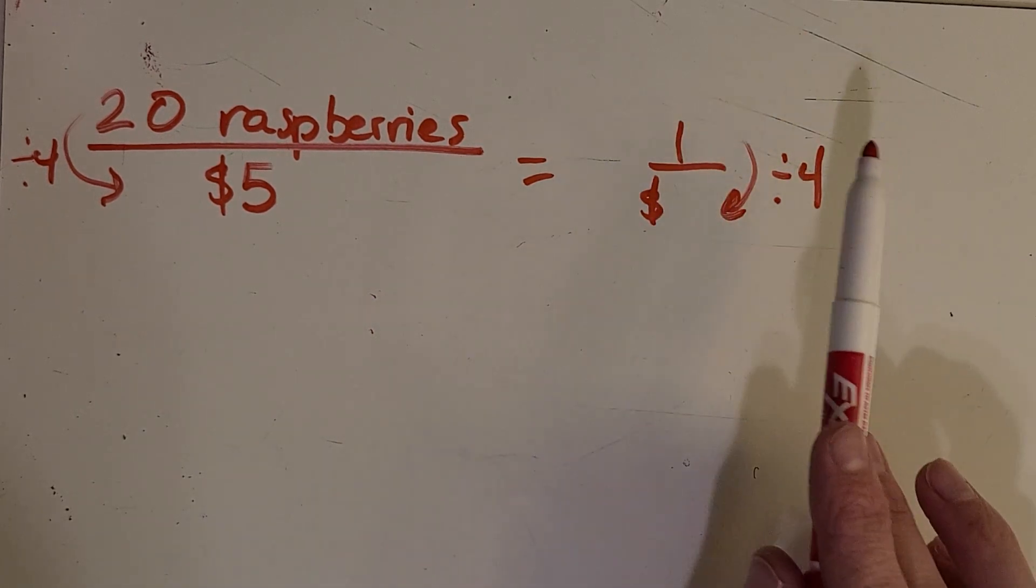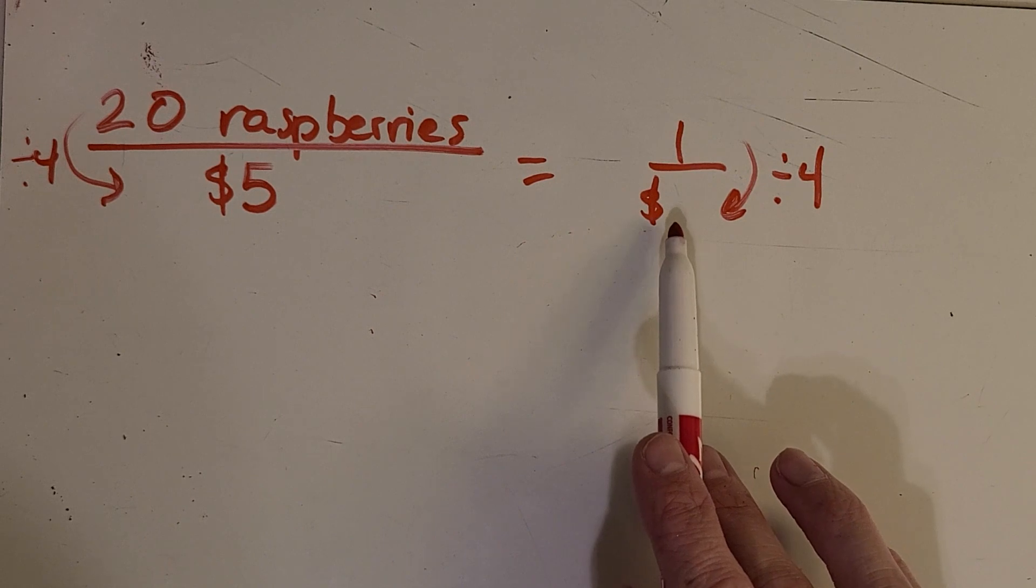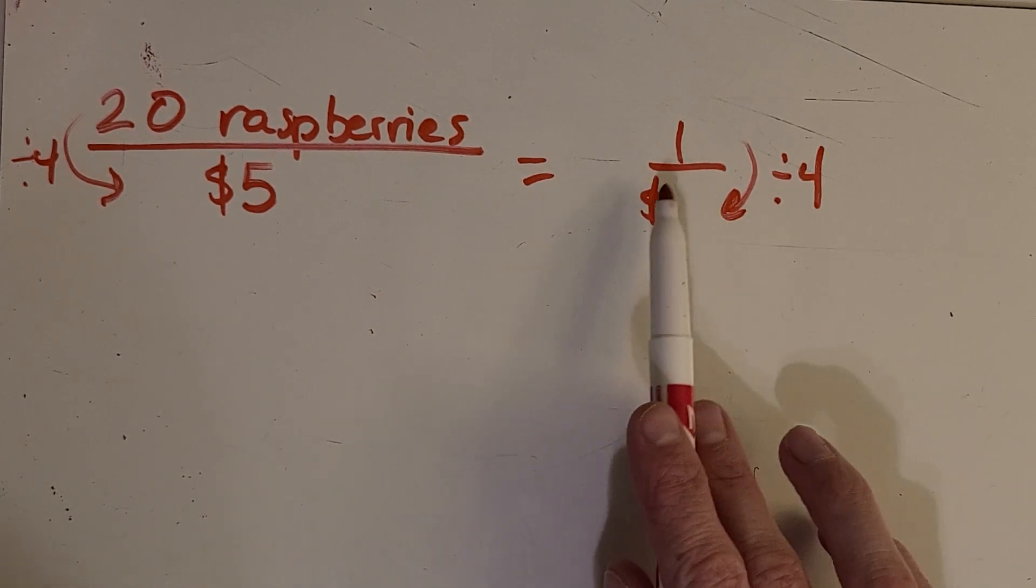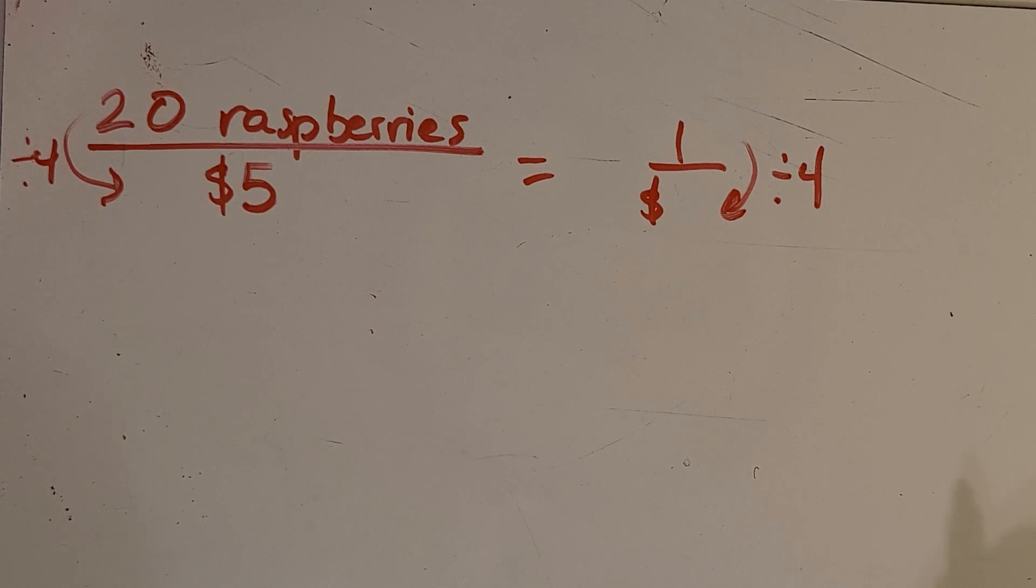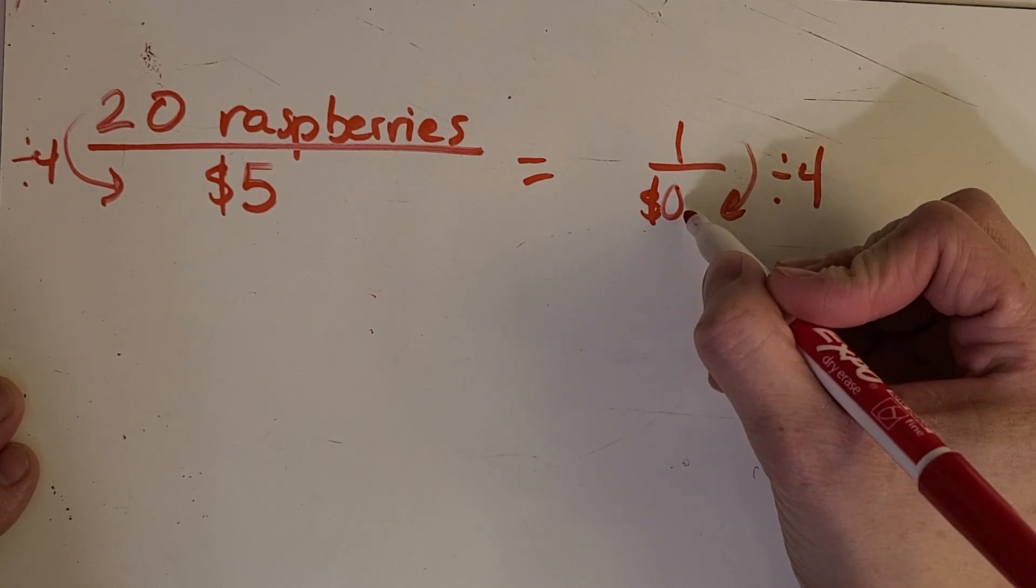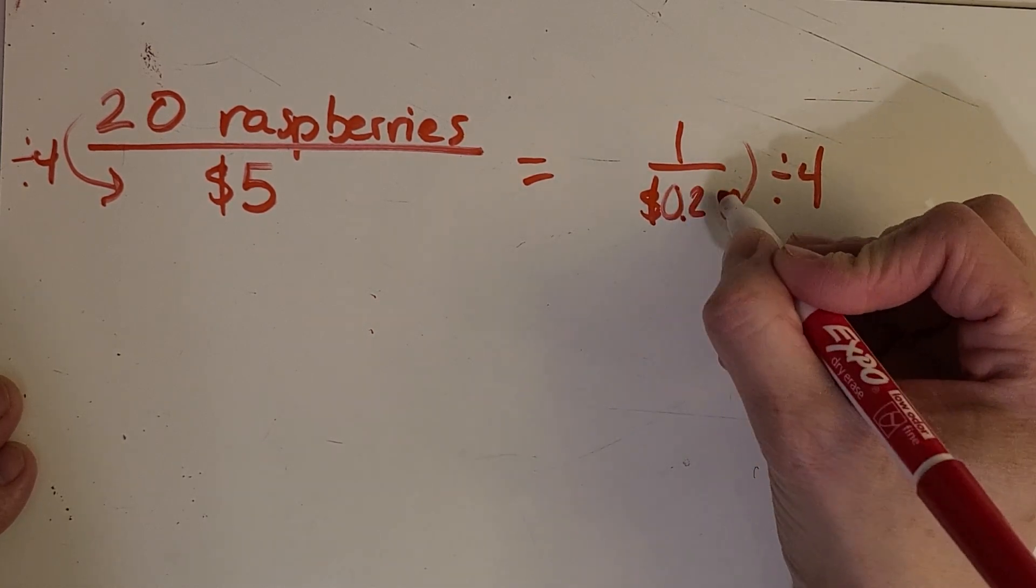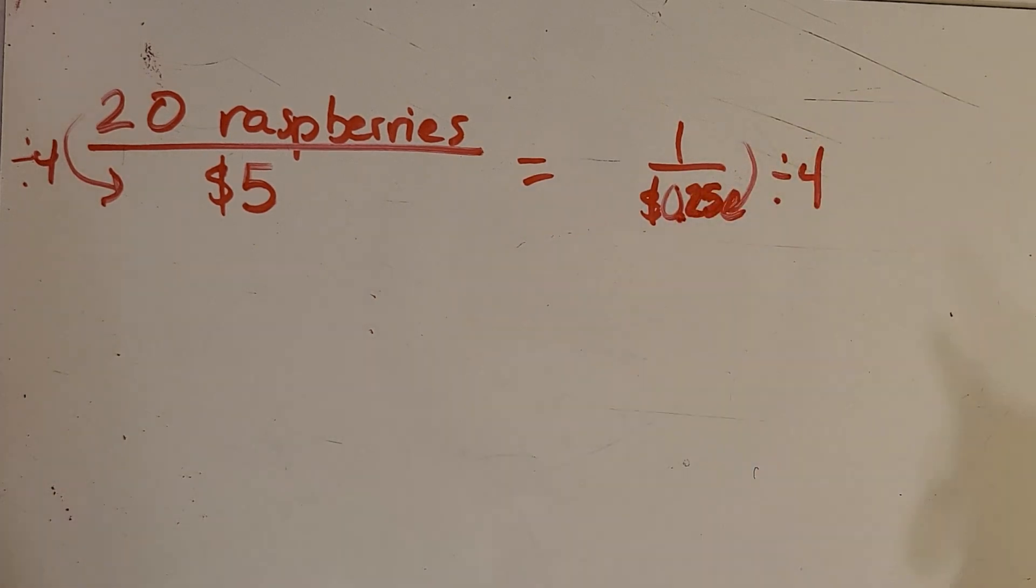And so how much do you think, how much money do you think goes right here? What would be 1 divided by 4? Okay, so some of us knew, especially if you watched that last video, we did something very similar, that it would be 25 cents because if you have one whole and you break it up into four pieces, then you've got this decimal number.